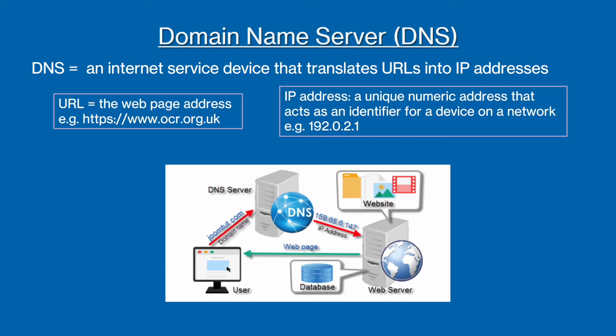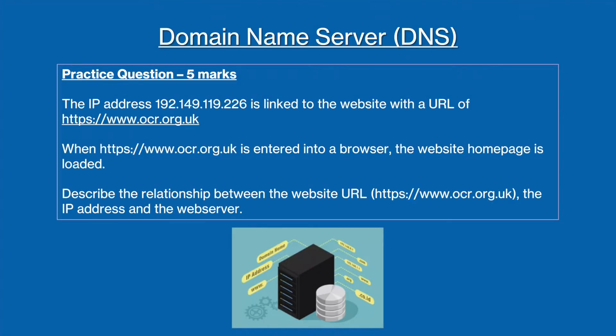All that can seem like a lot to start off with, so let's look at a practice question to break this up into little bits. The question states that the IP address 192.149.119.226 is linked to the website with a URL of https://www.ocr.org.uk. When this URL is entered into a browser, the website homepage is loaded, and you are asked to describe the relationship between the website URL, the IP address, and the web server. Pause the video here if you would like to have a go, and then we will go through the answer.